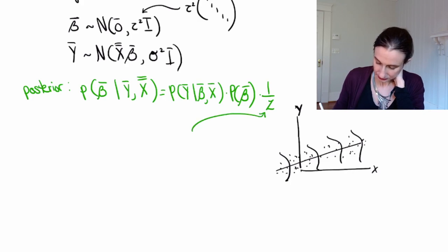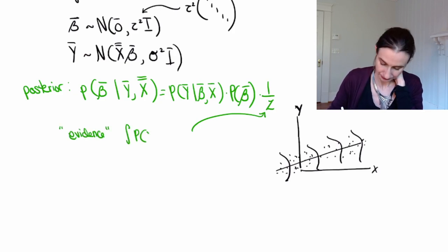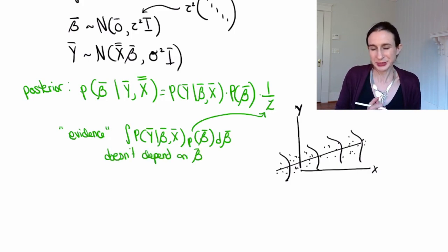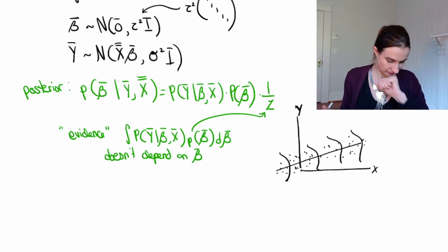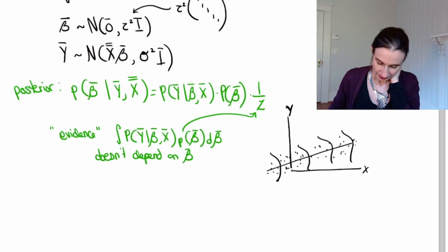And actually, the evidence, the reason we don't need it is because it doesn't depend on beta. I'll just write it down anyway so you can see that. It's actually an integral over beta. And of course, if it doesn't depend on beta, we really don't care about it because our whole goal is to optimize beta. But we'll carry it around for a while.